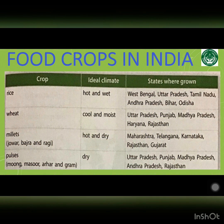Different types of crops need different types of climate. These crops are grown in West Bengal, Uttar Pradesh, Tamil Nadu, Andhra Pradesh, Bihar, Odisha, Punjab, Madhya Pradesh, Haryana, Rajasthan, Telangana, Karnataka and Gujarat.